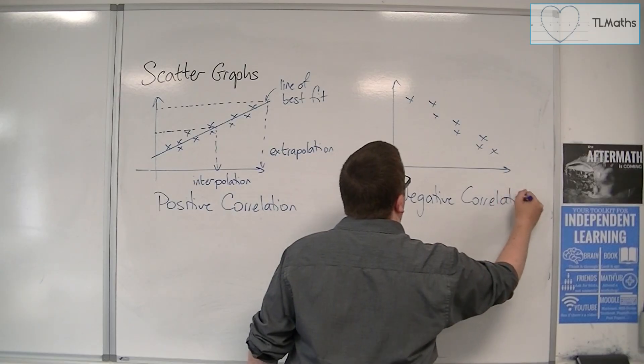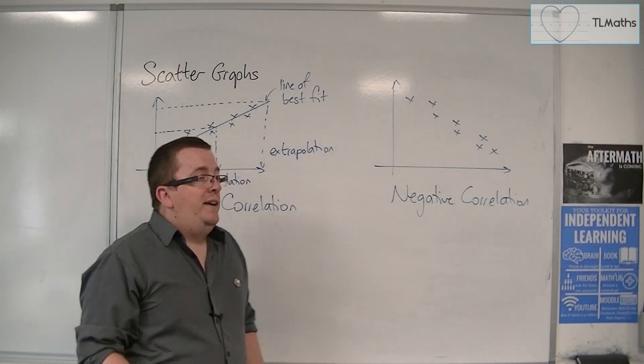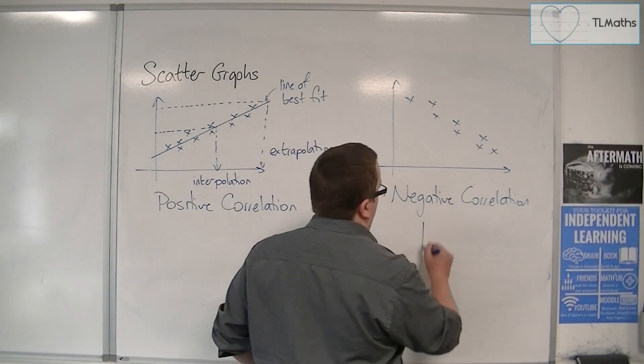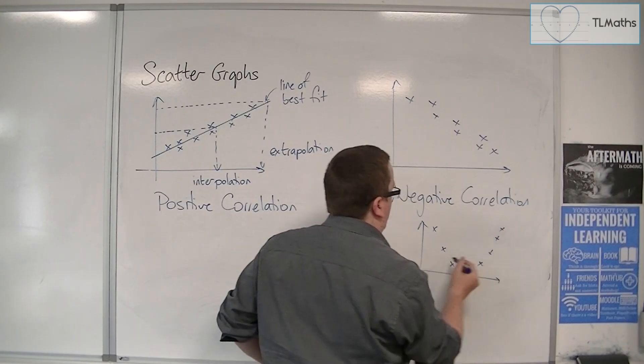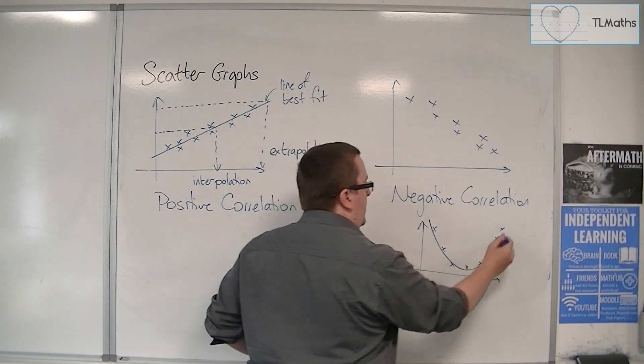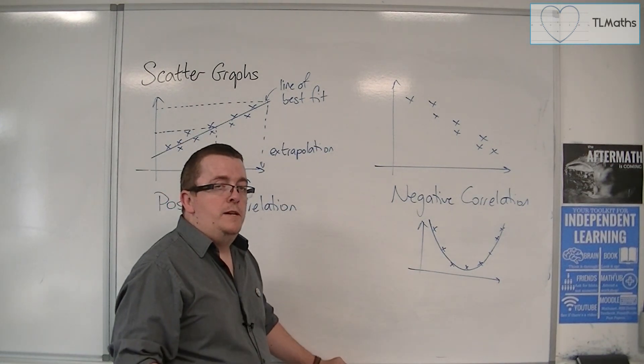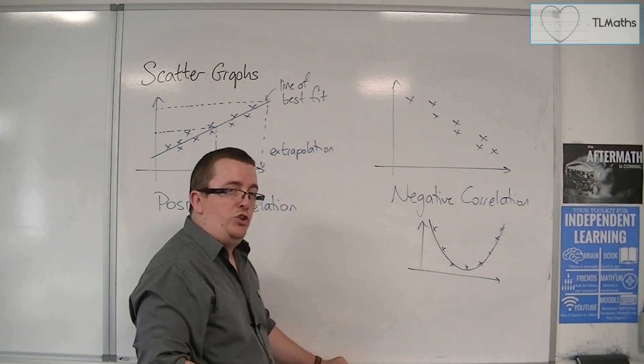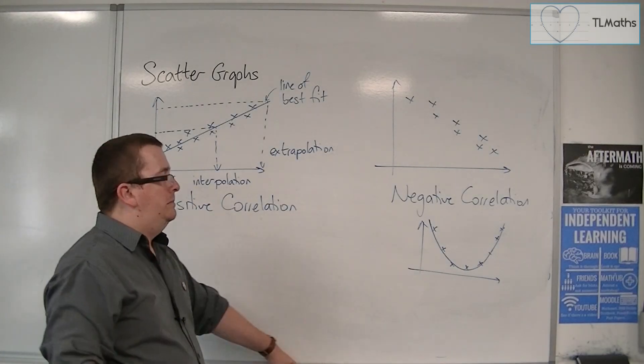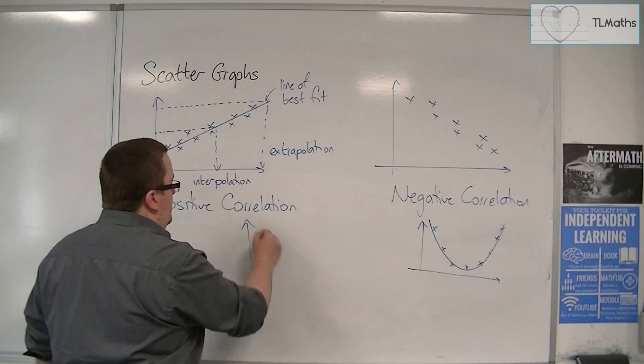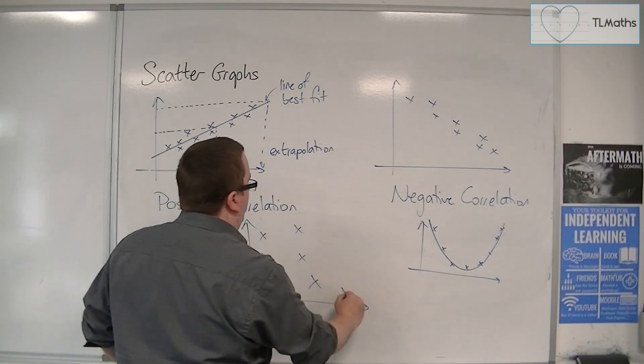But if it's not going in a straight line, then you might potentially have something that looks like this. Now, the data's not all over the place. It's looking like it's tending towards a curve. That doesn't mean that there's no correlation. But it is a more complicated situation that you would have to look more deeply into.